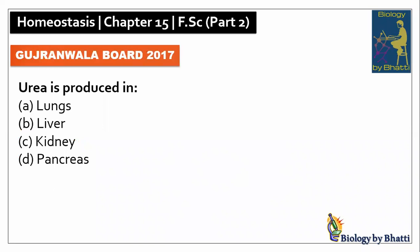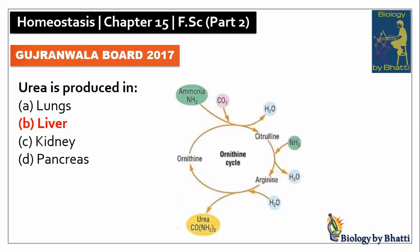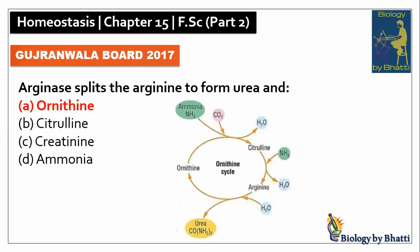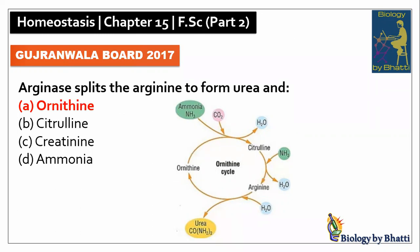Then, board of 2017: urea is produced in the urea cycle, so the answer was B option. In this paper, arginine splits to form urea — if you look at the diagram, arginine is split to produce urea and the other product is ornithine, so the answer was A option.